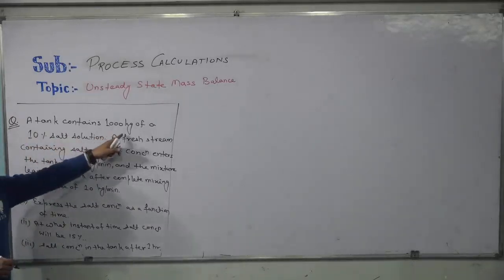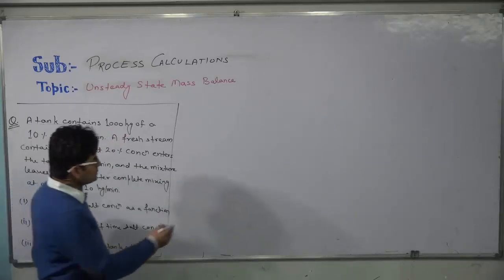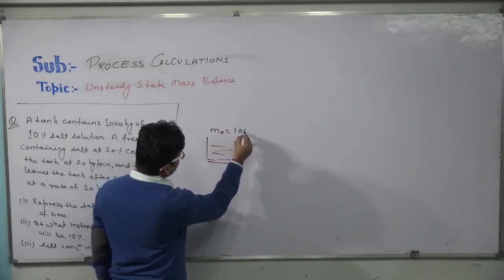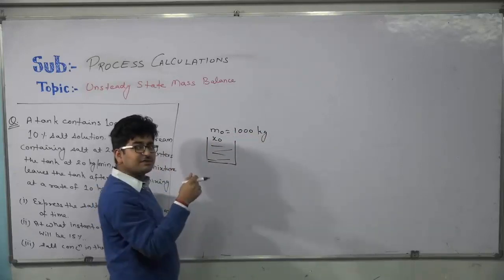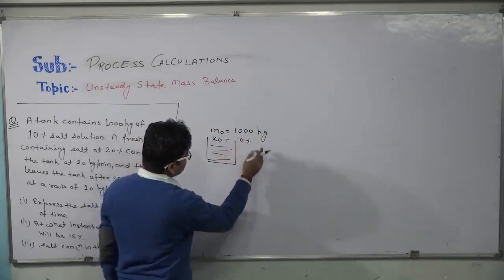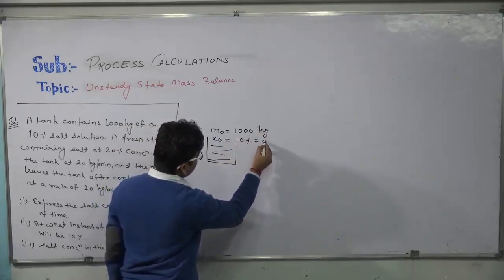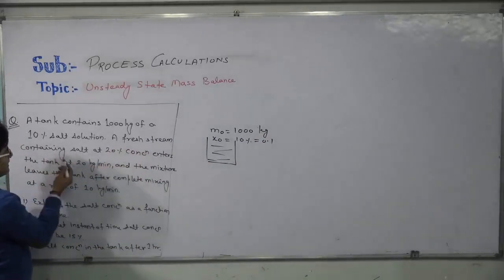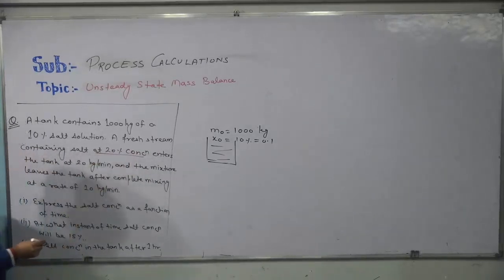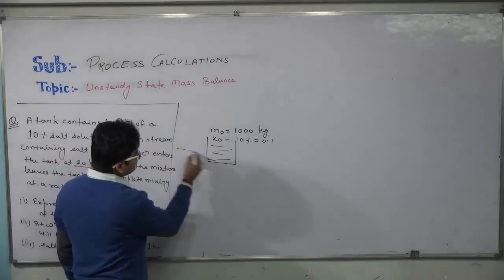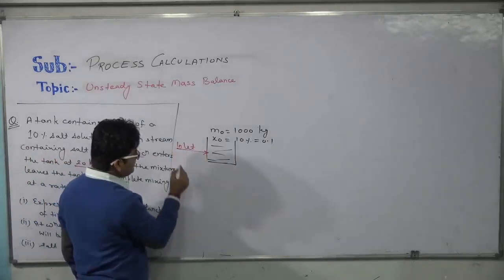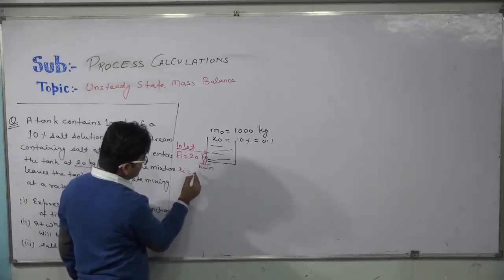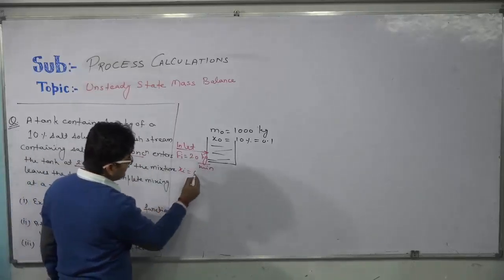A tank contains 1000 kg of a 10% salt solution. So the initial mass is 1000 kg and initial salt concentration x₀ is 10%, which is 0.1 in terms of mass fraction. A fresh stream containing salt at 20% concentration enters the tank at 20 kg per minute, so the inlet mass flow rate is 20 kg/min and inlet concentration is 0.2.